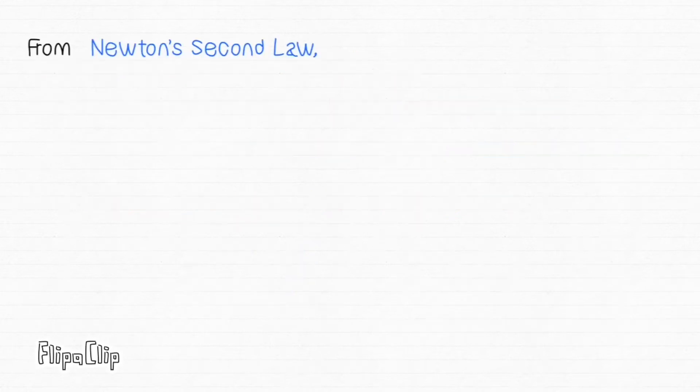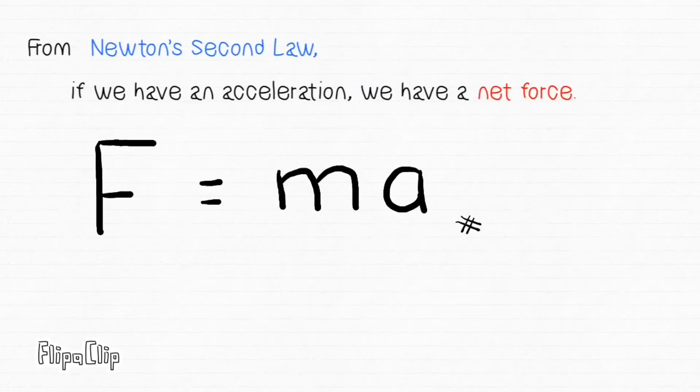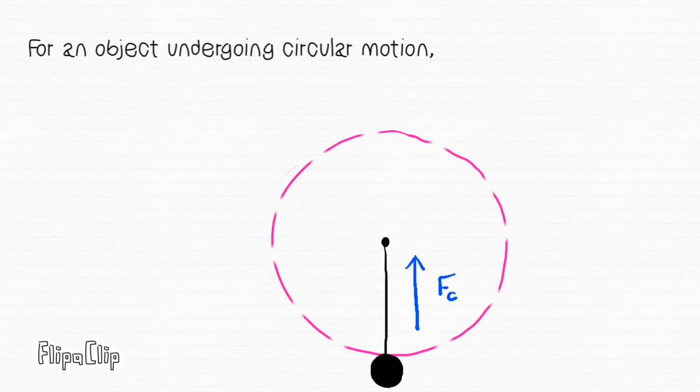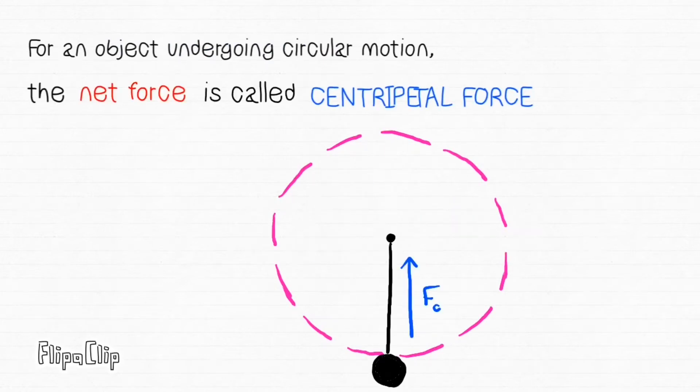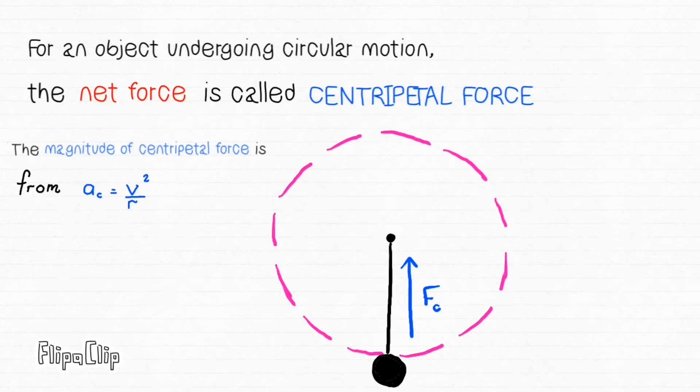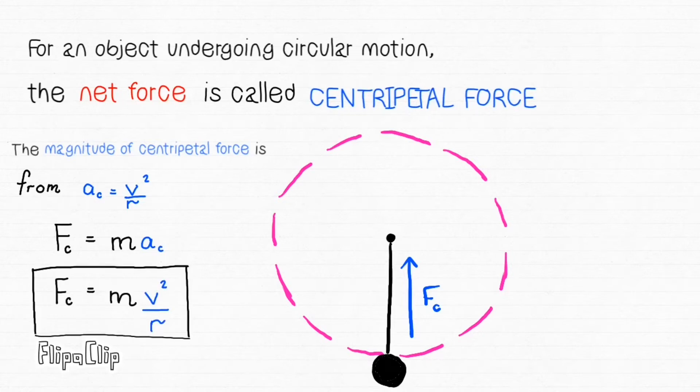From Newton's second law, if we have an acceleration, we have a net force. For an object undergoing circular motion, the net force is called centripetal force. The force always points towards centre. The magnitude of centripetal force is substituting V square over R into F equals ma. The formula is MV square over R.